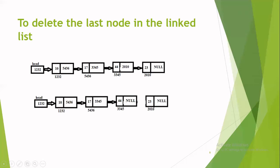This is diagrammatically illustrated here. The previous node link part is set to null. When the previous node link part is set to null, the access to the last node is broken. Once the access to the last node is broken, you can deallocate the memory allocated for this node by calling the free function in C language.